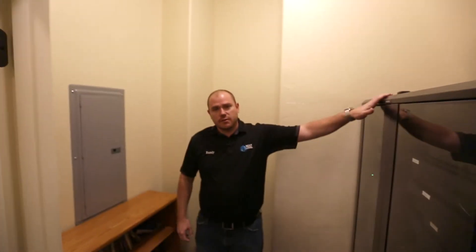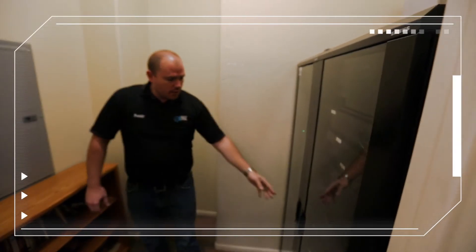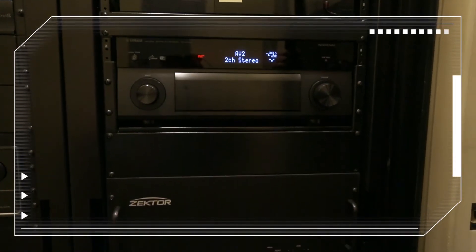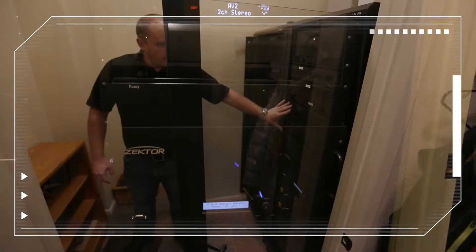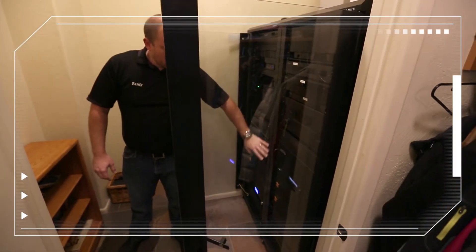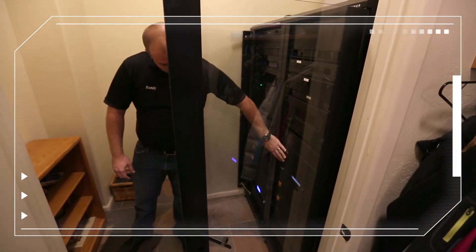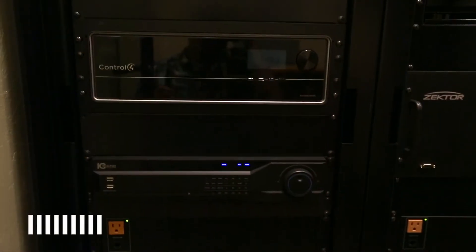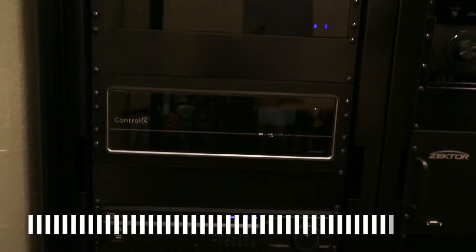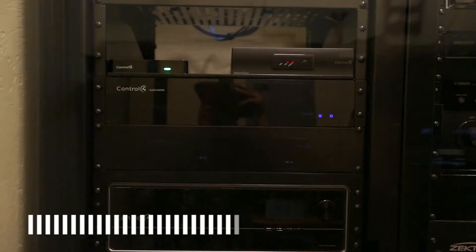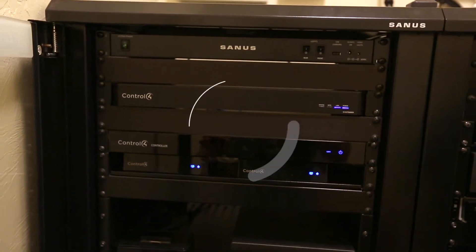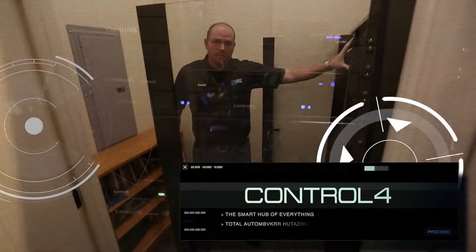Alright, so take you here into the heart of the system. What we've got here are two 36U racks. We've got several Blu-ray players, we've got the main audio-video receiver, an eight by eight video matrix, all of our surge protection down here, and then as we move over here on the left side, we've got our NVR for our camera system, our amplifiers for the audio throughout the house, and then of course our Control4 product, basically the smart hub of everything.